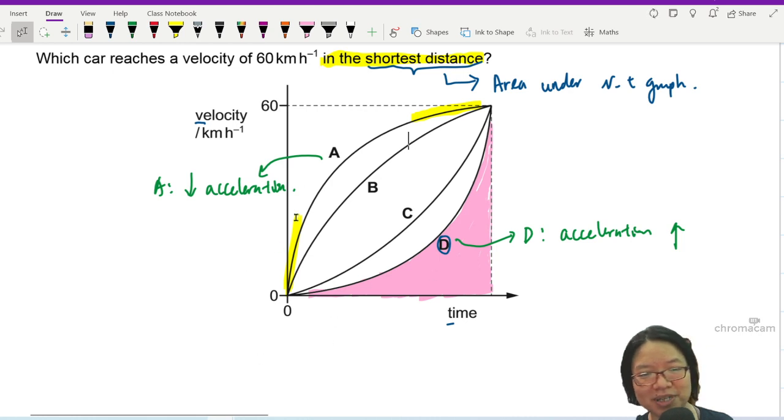Because when your speed is small, you accelerate a lot, so what? You still need to cover a long distance. So compared to D, where initially I accelerate slowly, and then after that, when I want to reach the finish line, I increase the velocity quickly.